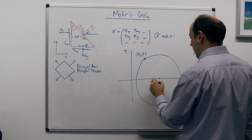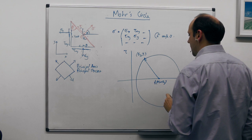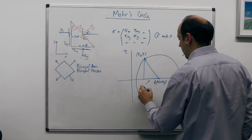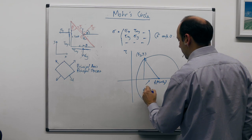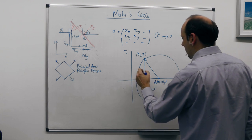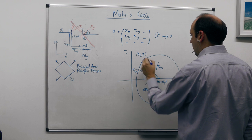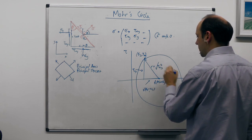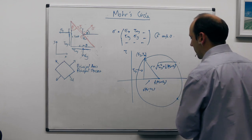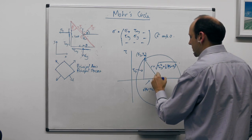The centre of the circle is at a half (sigma_x + sigma_y). The radius of the circle equals the square root of τ_xy² plus (a half(sigma_x - sigma_y))², which is the same as our equation before. So this radius is equal to τ_max.